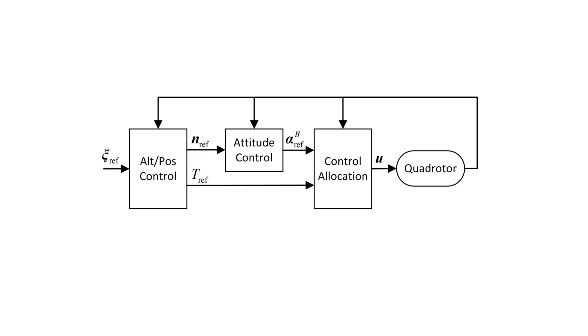The controller consists of three loops: the position control, attitude control, and control allocation. The position control loop provides desired thrust direction and the amount of thrust from reference set point.